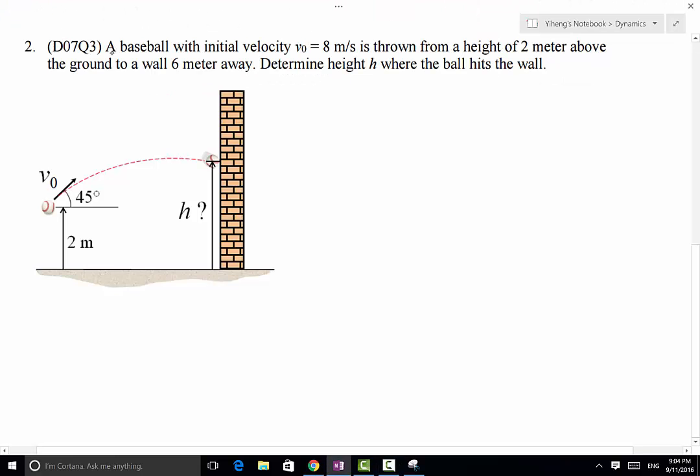In this problem, a baseball with initial velocity V0, that is 8 meters per second, is thrown from a height of 2 meters above the ground to a wall that is 6 meters away.